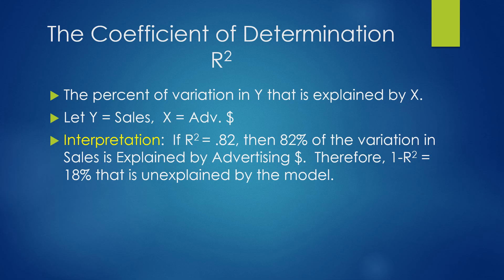We talked about the correlation coefficient last time. Now we're going to square r and talk about the coefficient of determination. It's the percent of variation in y that is explained by x. So if I have r-squared of 82%, and I'm explaining sales with advertising dollars, then 82% of sales can be explained by the amount spent on advertising. If we take 1 minus r-squared, that leaves us 18%, which is unexplained.